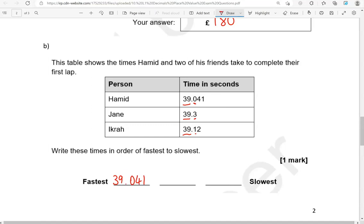Comparing 39.3 and 39.12, we've got 3 here and we've got 1, so 1 is smaller. That's why 39.12 will come next, and finally 39.3. So these are now in order starting with the smallest.